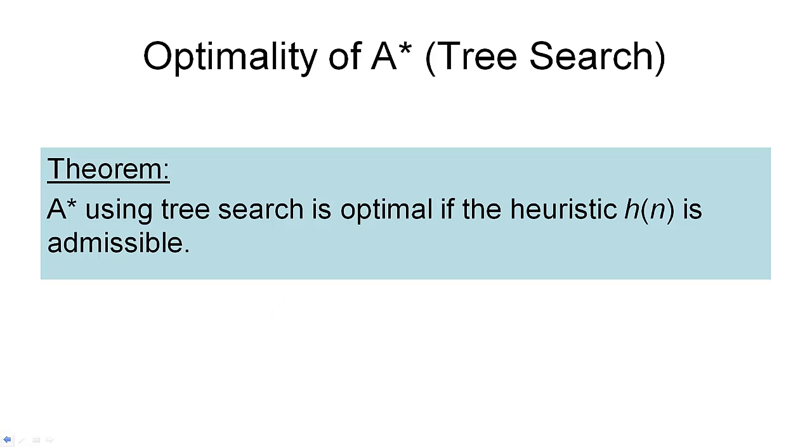This brings me to the most important property of A star, namely that it is optimal. We can prove the following theorem: A star using tree search is optimal if the heuristic h is admissible. Just as a reminder, optimal here means that the algorithm is guaranteed to find the shortest path from the initial state to a goal node. And this theorem tells us that if our heuristic is admissible, then A star will return with an optimal path. That is, of course, a very useful property for a search algorithm to have. By the way, a similar theorem can be shown for A star using graph search, but I won't go into this here now.